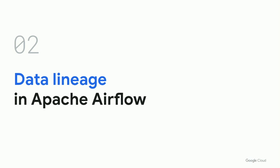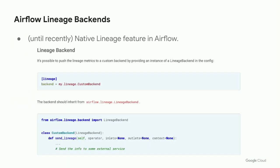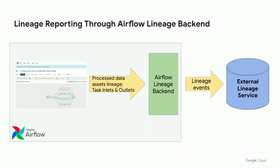Until recently, the technology in Airflow was as follows. We had this experimental lineage backends technology, which let you define a lineage backend. The core method was sendLineage, invoked on any task completion, and based on the operator instance and the defined inlets and outlets it would process that information. The flow: your DAG has processing tasks; the operator instance, task inlets and outlets are populated, they end up in the Airflow lineage backend, which packages a lineage event and sends it to some external lineage service, as Airflow does not have lineage capabilities itself.